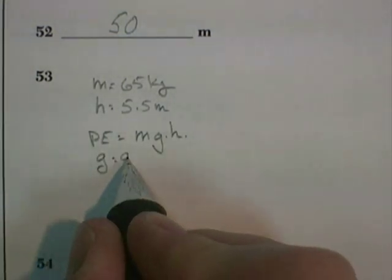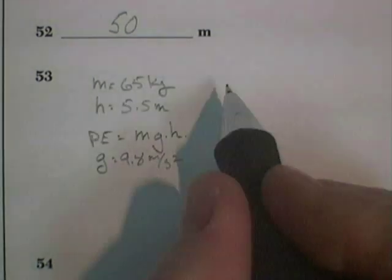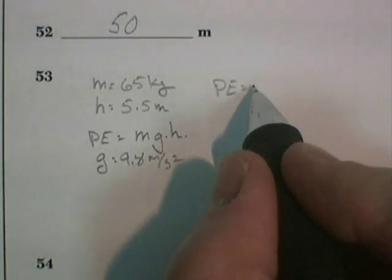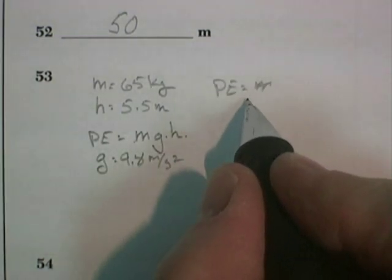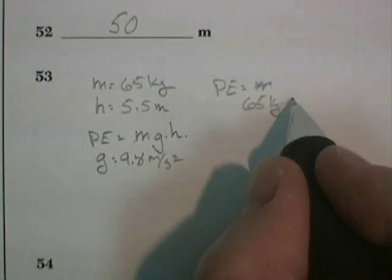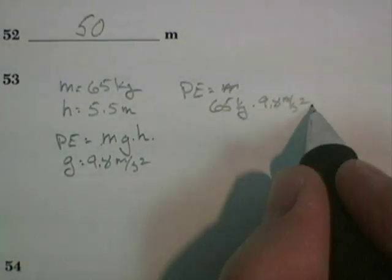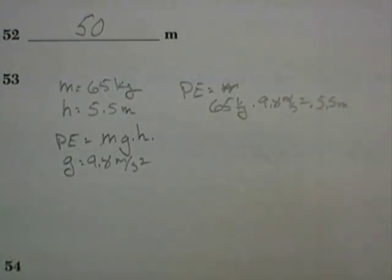where G is 9.8 meters per second squared. So the potential energy necessary is going to be equal to, I've already written the formula there, so I can just plug in here, 65 kilograms times 9.8 meters per second squared times 5.5 meters.